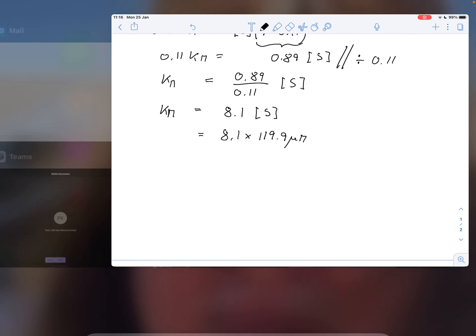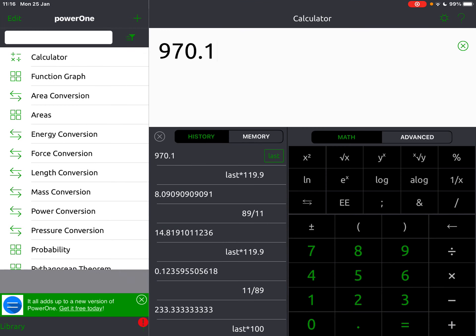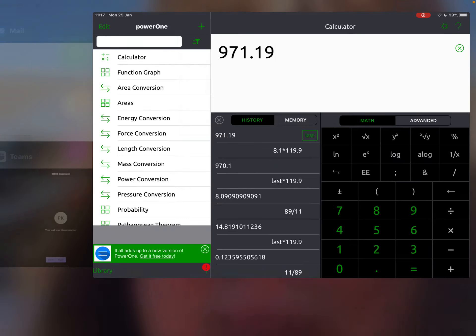So let's put that in the calculator. 8.1 times 119.9. So 119.9. And that gives us a Km of 971.2.